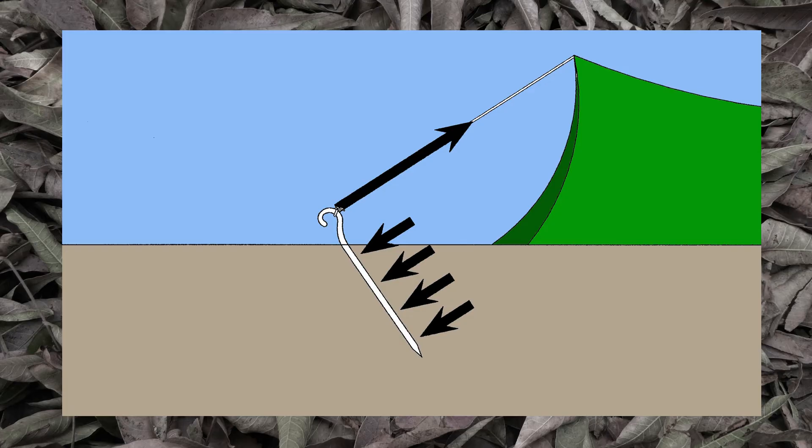Which also means that there's a force exerted on the stake that is equal to and opposite from the force from the guy line. And the force that negates the pull of the guy line can come from only one place, and that's the dirt.